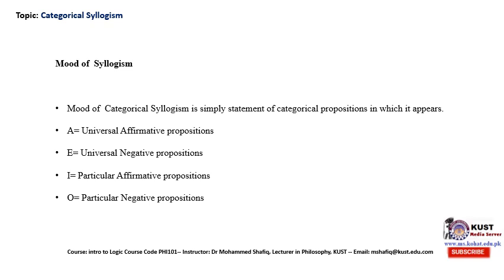Now we move to the mood of syllogism. In syllogism there are two very important things to keep in mind, which are going to help us while we are checking the validity of categorical syllogism in symbolic form. If we don't know the mood and figure of syllogism, we won't be able to decode any categorical syllogism which is in symbolic form. So, what is the mood of syllogism?